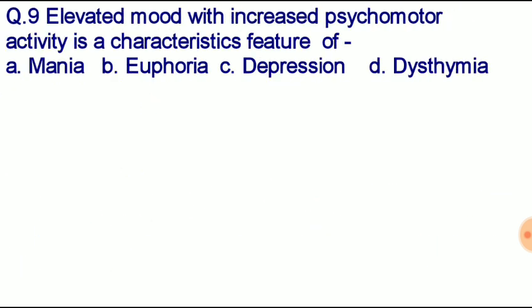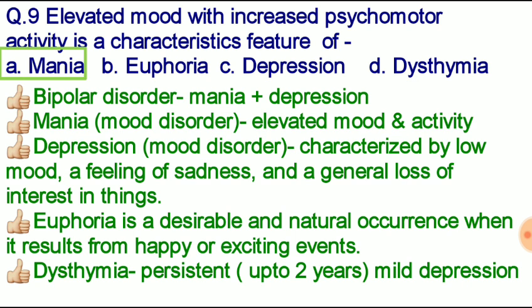Question number nine: elevated mood with increased psychomotor activity is a characteristic feature of — option A: mania, option B: euphoria, option C: depression, option D: dysthymia. Correct answer: option A, mania. Both mania and depression are bipolar disorders. In mania, elevated mood and activity are seen; in depression, low mood, sadness, and general loss of interest are characteristic. Euphoria is a natural occurrence from happy events. Dysthymia is mild depression persisting more than two years.